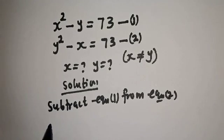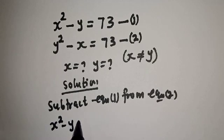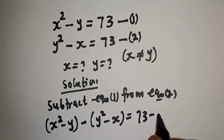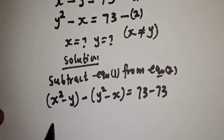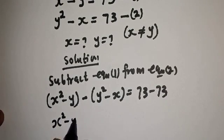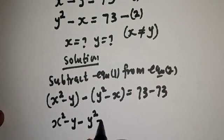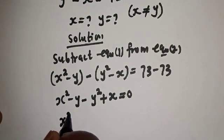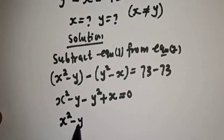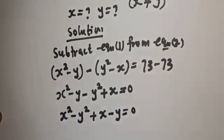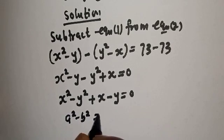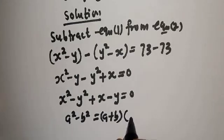Then, we have S squared minus Y minus (Y squared minus S) is equal to 73 minus 73. This gives S squared minus Y minus Y squared plus S is equal to 0. Rearranging: S squared minus Y squared plus S minus Y is equal to 0. Note that S squared minus Y squared is a difference of squares.